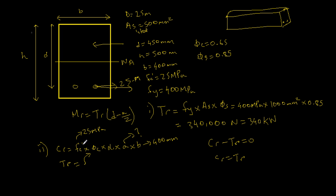Therefore they're equal to each other. Because of this property we can say that Tr is now equal to this equation over here. Therefore 340,000 Newtons, which is 340 times 10 to the power of 3, equals 25 MPa times 0.65 times 0.8 times a times b. And if we want to solve for a, we bring everything to the other side.